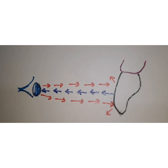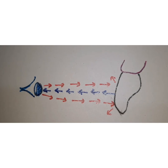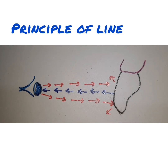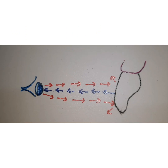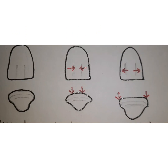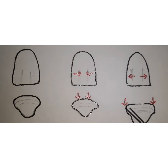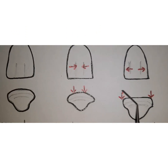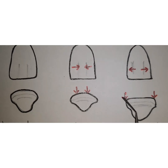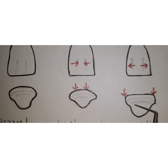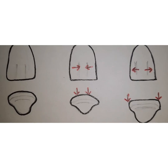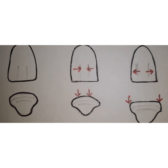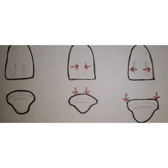Next is the principle of line, which is basically the use of horizontal and vertical lines and ridges. Horizontal lines make the object appear more wider, whereas vertical lines make the object appear narrower than it is.